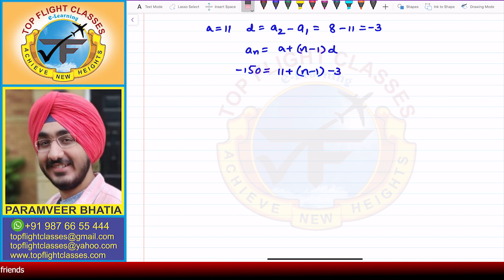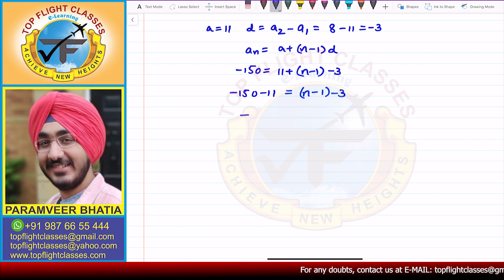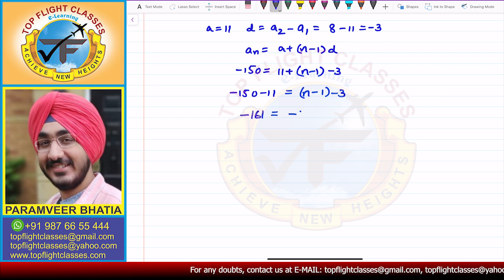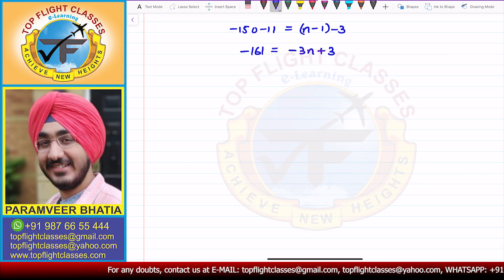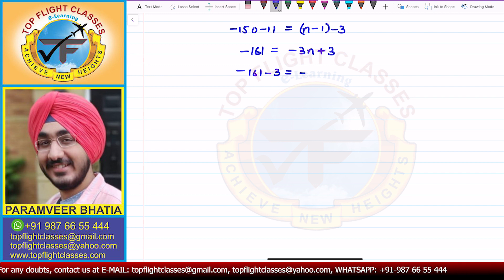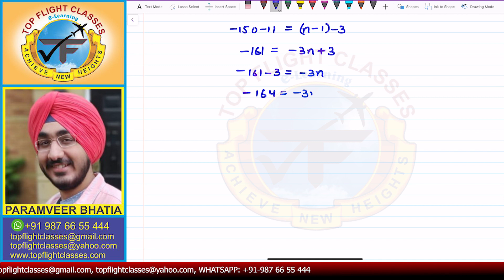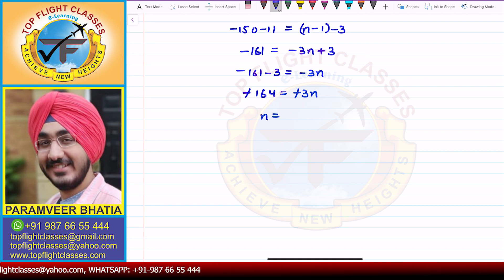From here, minus 150 minus 11 is equal to N minus 1 into minus 3. So I get minus 161 is equal to minus 3N plus 3. And from here, minus 161 minus 3 is equal to minus 3N. So minus 164 is equal to minus 3N. The negatives cancel, giving N is equal to 164 by 3.